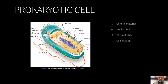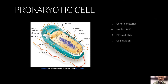Bacteria have flagella for motility — though some bacteria do not have flagella. Some of them also have pili, which allow them to share genetic material. Bacteria are very unique in the sense that they have adapted to life as a single cell, carrying out all the processes of replication, cell division, as well as the bioenergetic processes within a single cell.